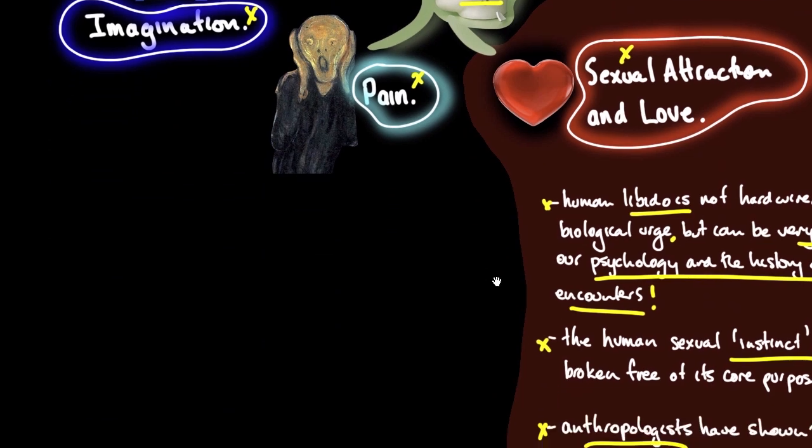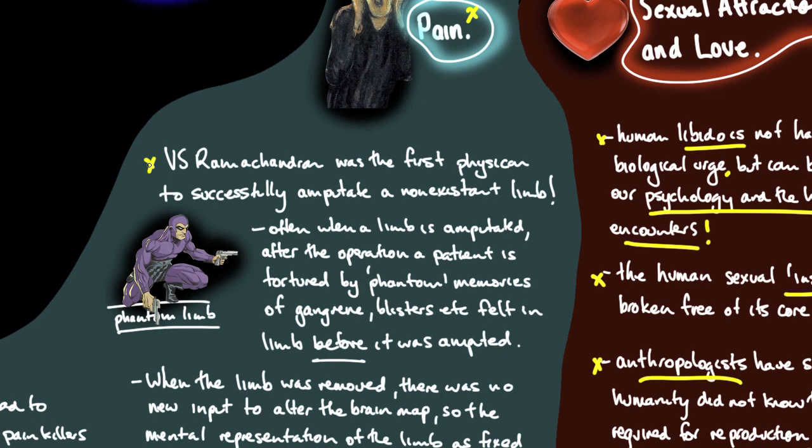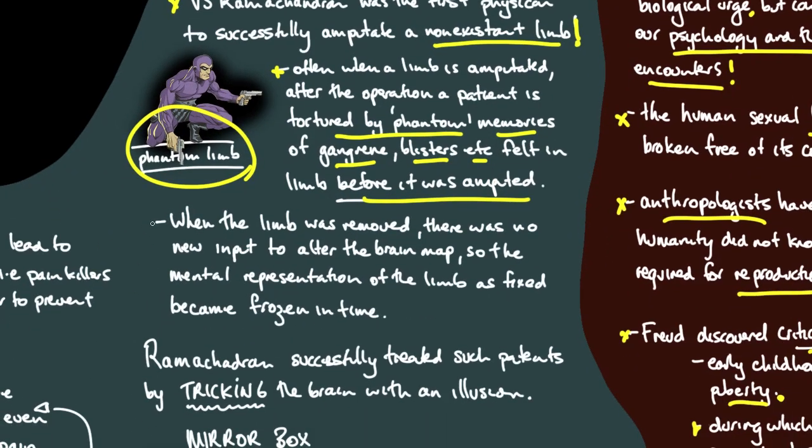Pain. V.S. Ramachandran was a doctor and he was the first physician to successfully amputate a non-existent limb. What? Often when a limb is amputated, after the operation a patient is tortured by phantom memories of injury like gangrene, blisters, etc., that they actually felt in the limb before it was amputated. And thus the concept of a phantom limb. When the limb was removed, there was no new input to alter the brain map. So the mental representation of the limb became frozen in time. The brain hasn't had a chance to process the fact that there's no longer a limb. So it still has a representation of that limb in its image of the body.